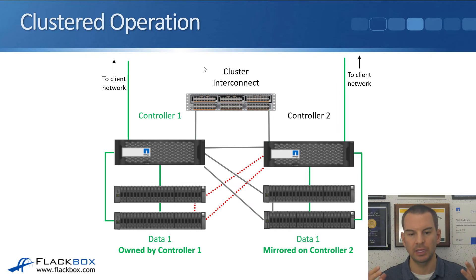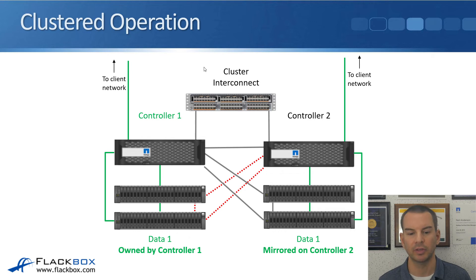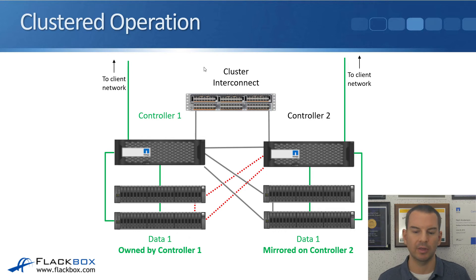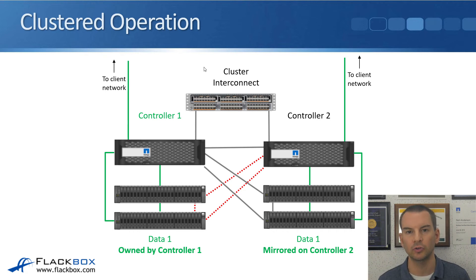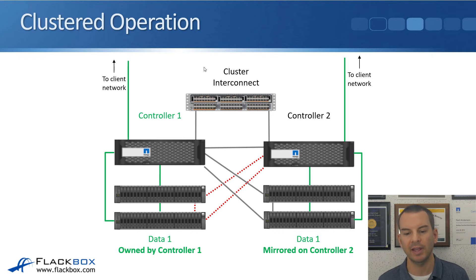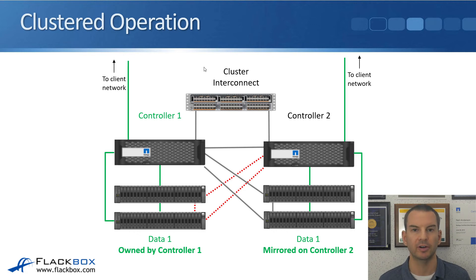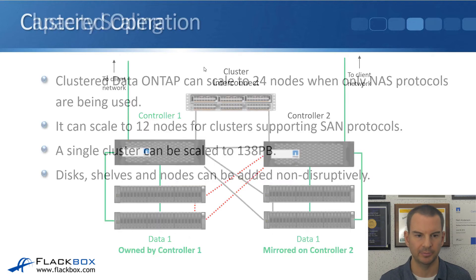With Clustered ONTAP, you can also mirror your data throughout the cluster. In that case, if a client comes in and hits Controller 2 and Data 1 is on both Controller 1 and Controller 2, it will be served directly by Controller 2. That avoids the small latency of going over the Cluster Interconnect and adds some additional redundancy as well.